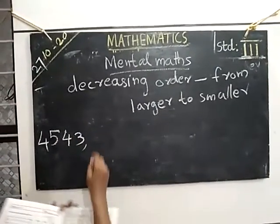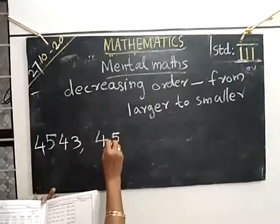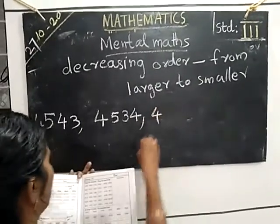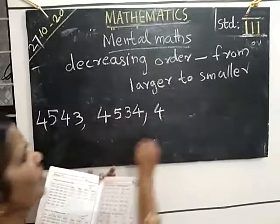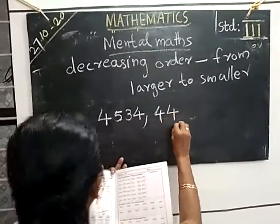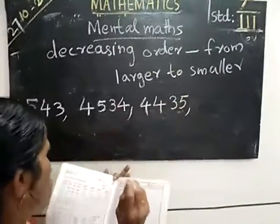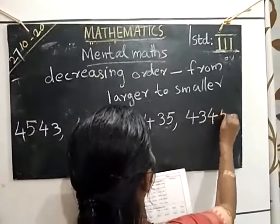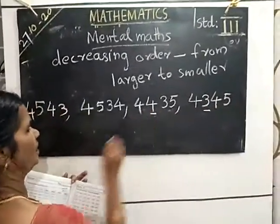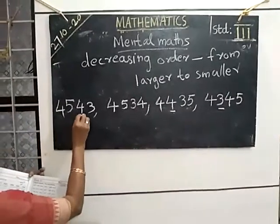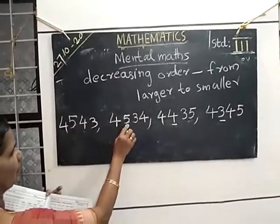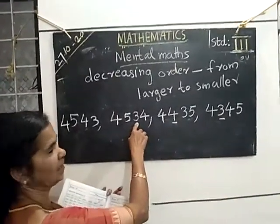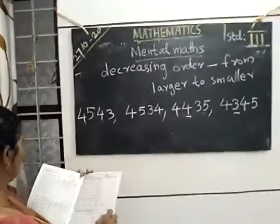Then which number is next? 4,534. Next number after that: look at the hundreds — here is 400, so 4,435. The last number is 4,345 — here only 300. We compare the tens place: here 4 tens, here 3 tens. So this is larger. Next number.